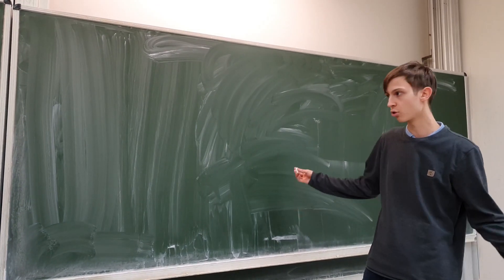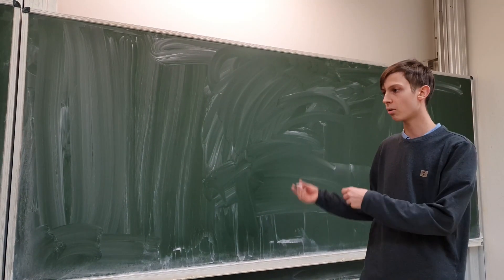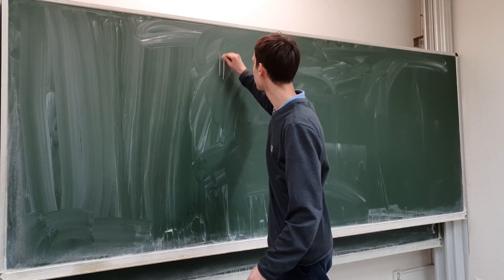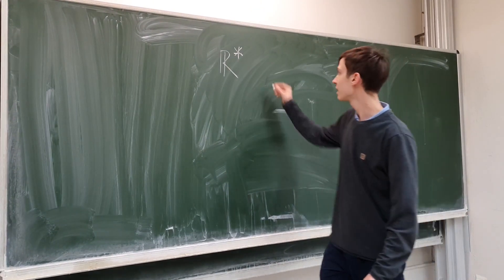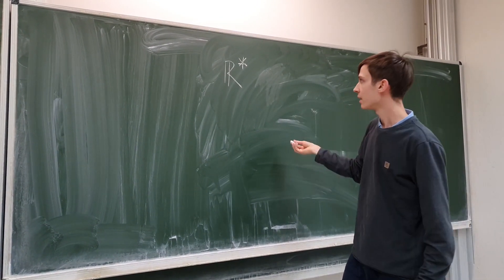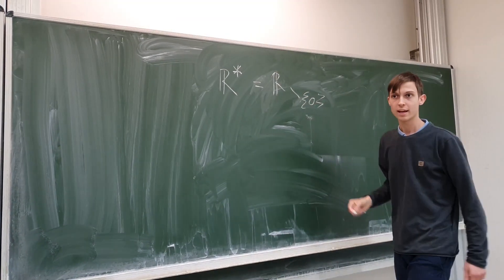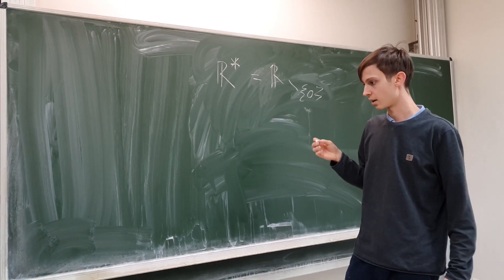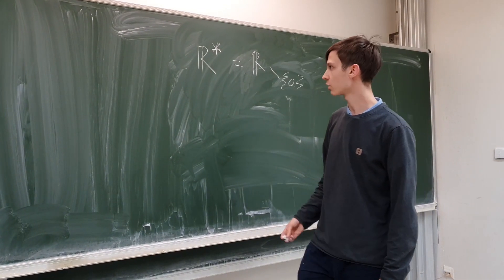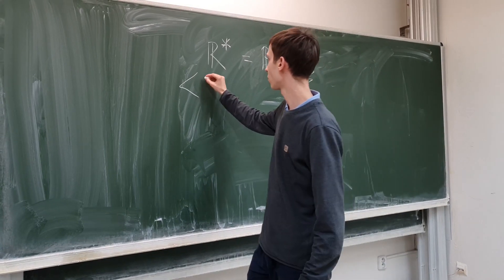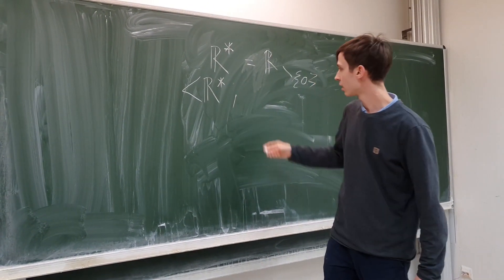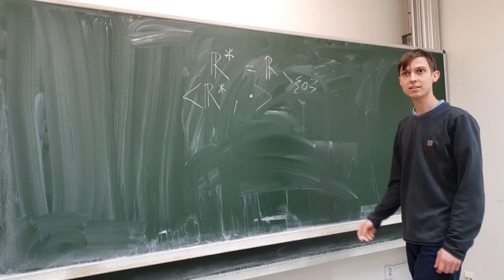For a concrete example, a very good example of a group — probably the most basic one to think of — is the real numbers set. More specifically, it is all real numbers except zero. We'll call it the group of non-zero real numbers. Zero is excluded because of one of the requirements we'll discuss, and the closed operation of this group will be multiplication.